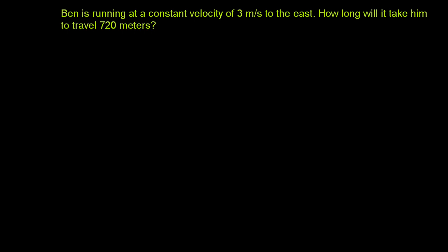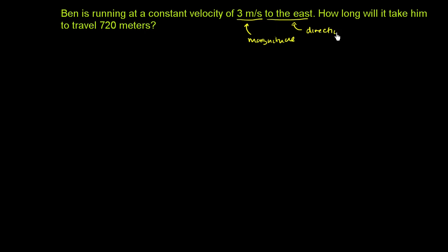Let's work through another few scenarios involving displacement, velocity, and time — or distance, rate, and time. Ben is running at a constant velocity of 3 meters per second to the east. As a review, this is a vector quantity: they're giving us the magnitude and the direction. If they just said 3 meters per second, that would just be speed. Since they include 'to the east,' it's velocity, not speed.